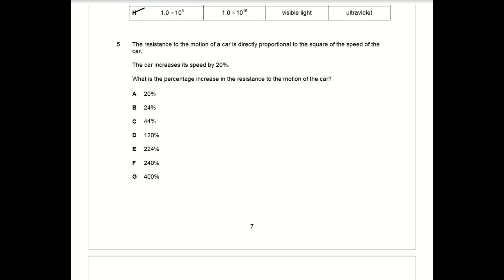For question five you want to form a proportionality relationship. You know that the resistance is proportional to square of the speed, so r is proportional to v squared. This can be written as r equals some constant of proportionality k times the speed squared. If the speed increases by 20 percent, v is now 1.2 times what it originally was. When you square 1.2 you get 1.44, so the new resistance is 44 percent higher than the original one.